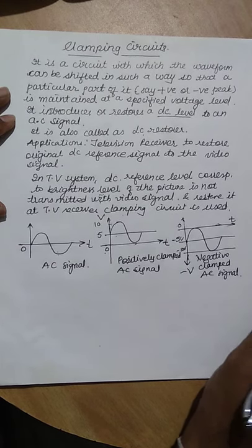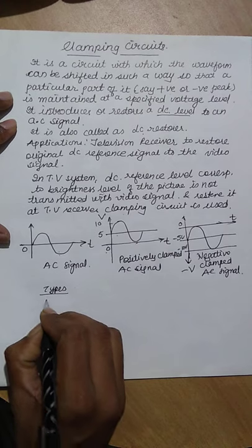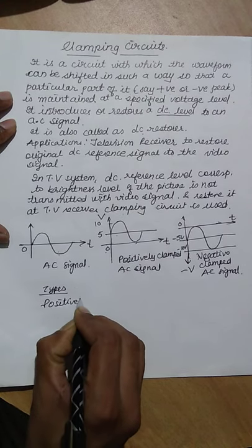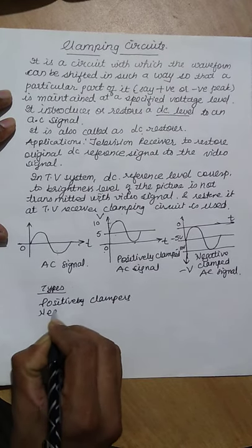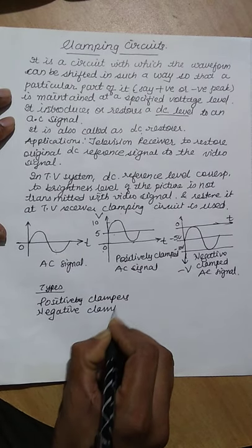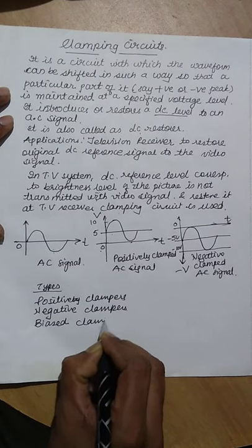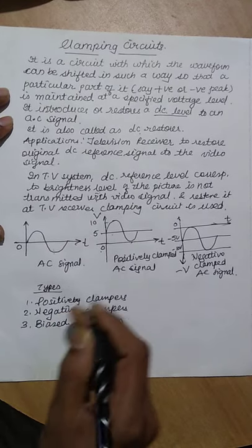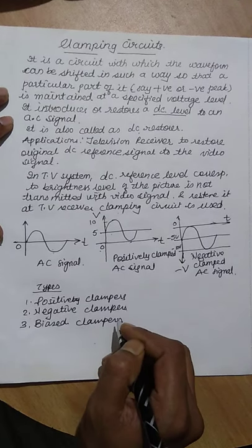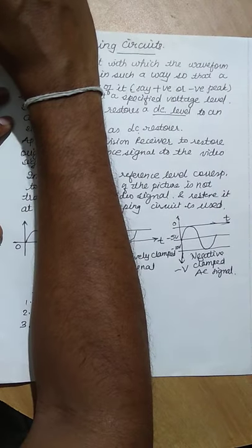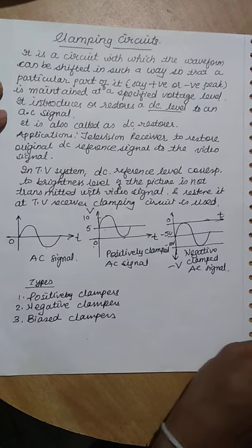Now we will discuss the types of clamping circuits: positive clampers, negative clampers, and biased clampers. We will discuss each — positive clamper, negative clamper, and biased clamper — in detail in the next part, studying each one by one.